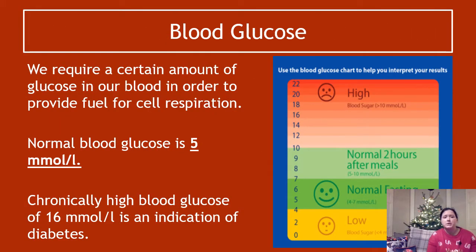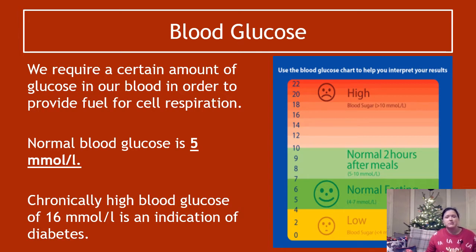Blood glucose — we require a certain amount of glucose in our blood in order to provide fuel for cell respiration. Glucose is broken down to pyruvate, a chain of reactions happens, you get ATP produced and that's used for energy-requiring processes. Normal blood glucose is 5 millimoles per litre — that's underlined because you need to know it.